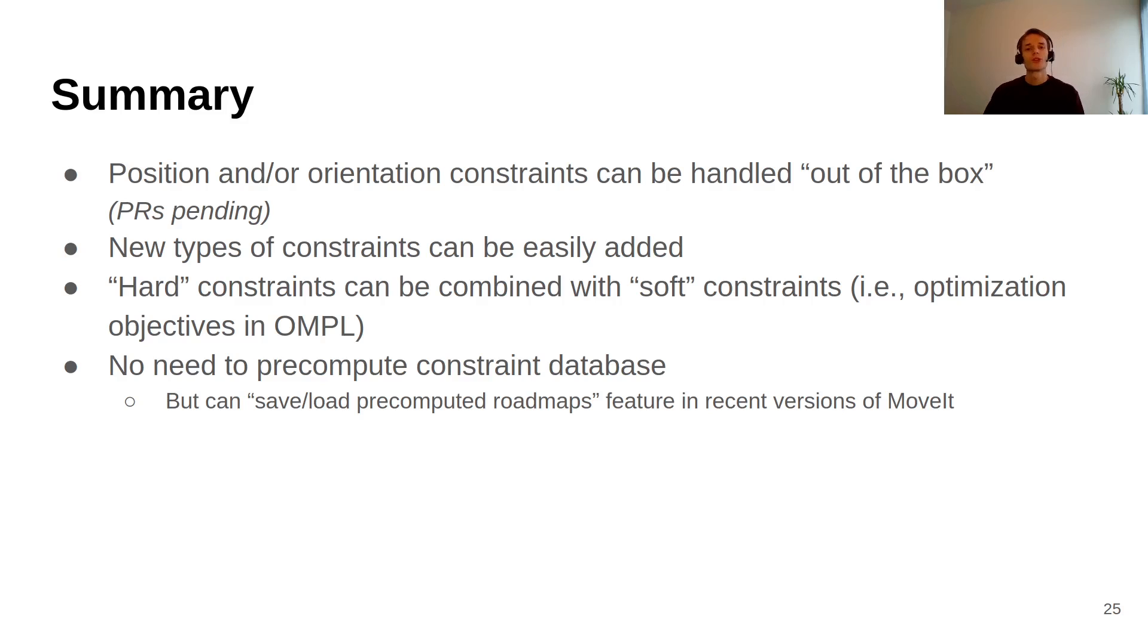So in conclusion, at the moment when the pull request is merged we will get position constraints and after that orientation constraints for the end effector or any link of the robot. And new types of constraints could easily be added, but you have to build from source of course.